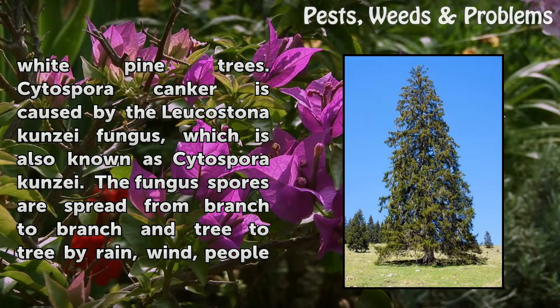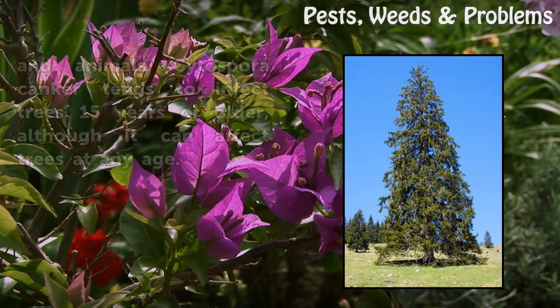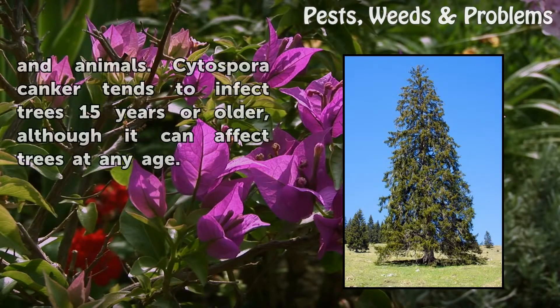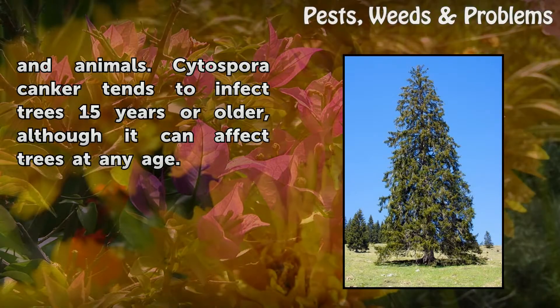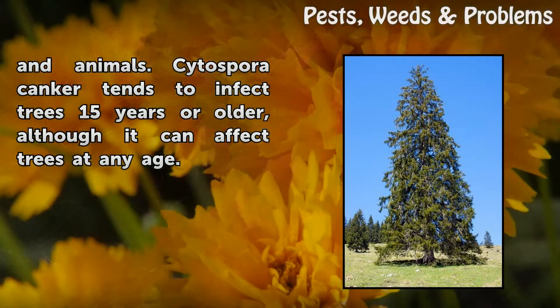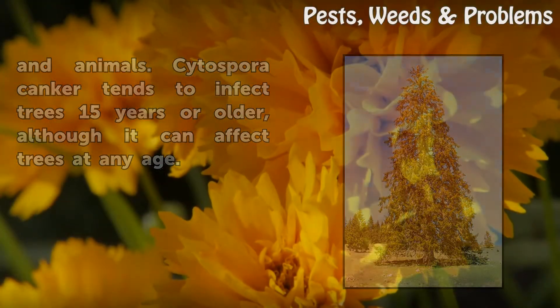The fungus spores are spread from branch to branch and tree to tree by rain, wind, people, and animals. Cytospora canker tends to infect trees 15 years or older, although it can affect trees at any age.